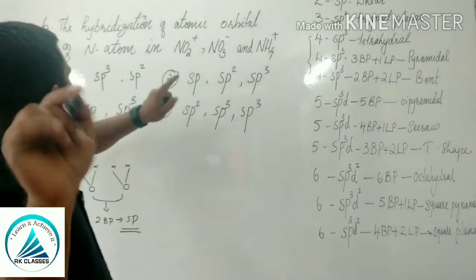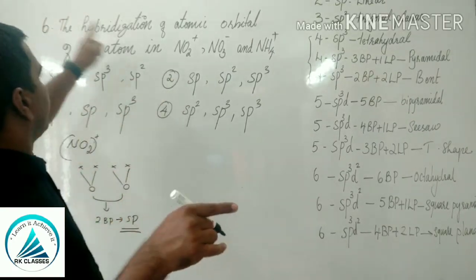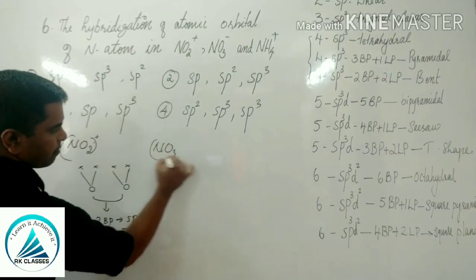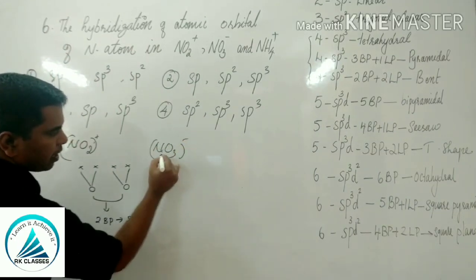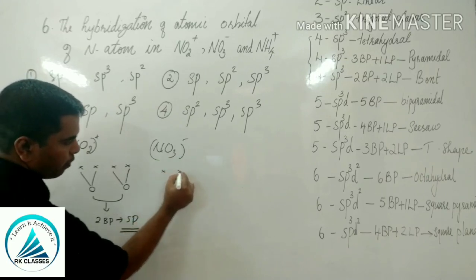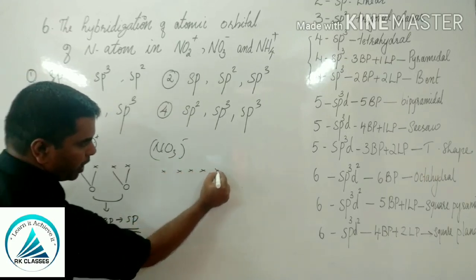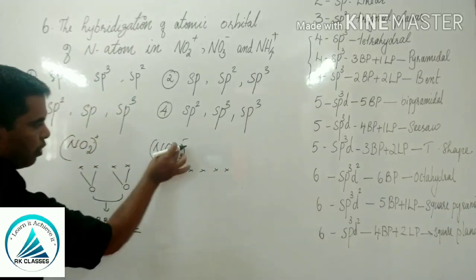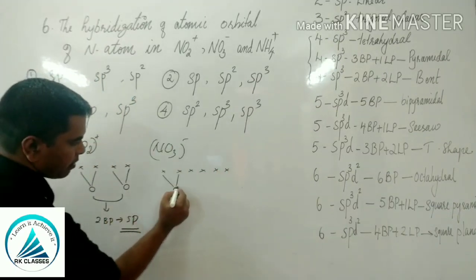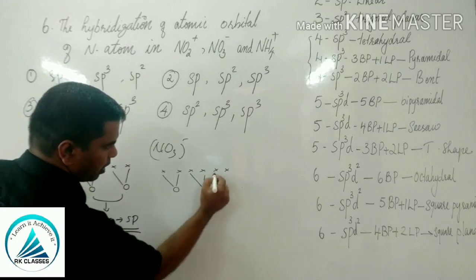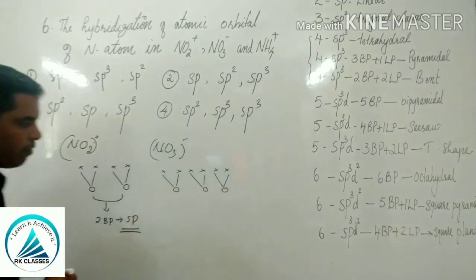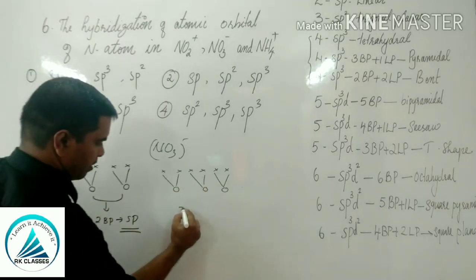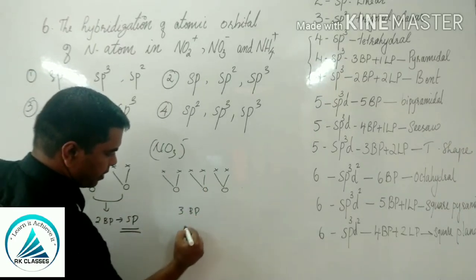For NO3 minus, nitrogen has 5 valence electrons, plus 1 from the negative charge — giving 6. With 3 oxygen atoms, each forming a sigma bond, there are 3 bond pairs. Hybridization is sp2.